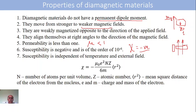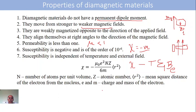From the expression, it is clear that susceptibility xi does not depend on either temperature or external field — it is independent of both. Xi depends on the number of atoms per unit volume of the specimen, the atomic number of the specimen, the mean square distance between the nucleus and the electron cloud, and the charge and mass of the electron. Mu naught is the permeability of free space, whose value is 4π × 10 power minus 7 Henry per meter.